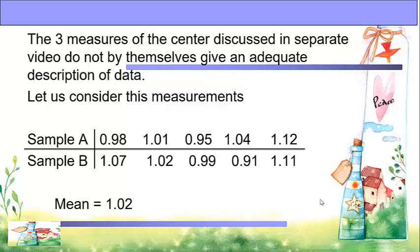Let us consider this measurement — sample A and sample B. The data set of sample A has a mean of 1.02, and the data of sample B also has a mean of 1.02. Both samples have the same mean, 1.02. It is quite obvious that sample A is more uniform than sample B. The variability or dispersion of the observations from the average is less in sample A than for sample B. Therefore, we feel more confident when we select sample A, which is closer to the average.